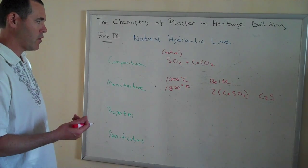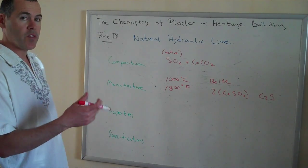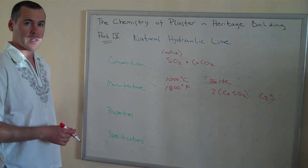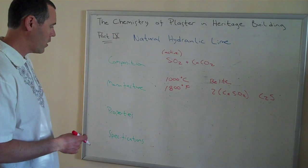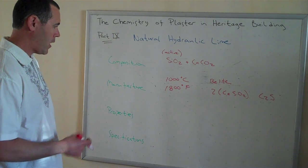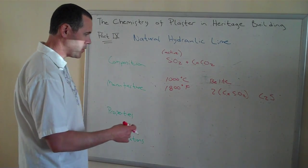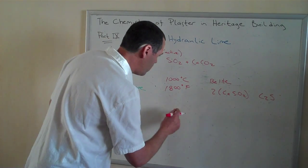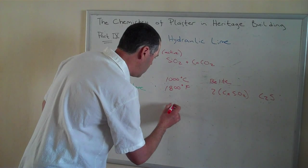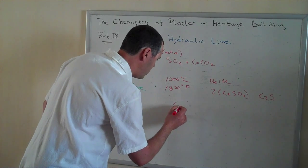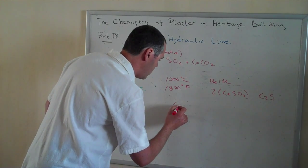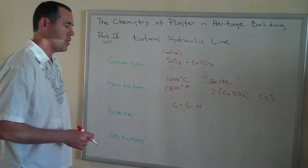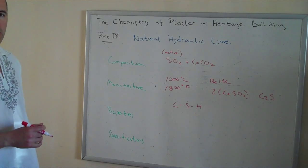Now we have something that is kind of at a mid-stage, and we're going to go through the natural hydraulic lime cycle in a subsequent video. There'll be a further reaction when it's mixed with water. That calcium disilicate starts to react further, and you get what they call a CSH — a cementitious gel.